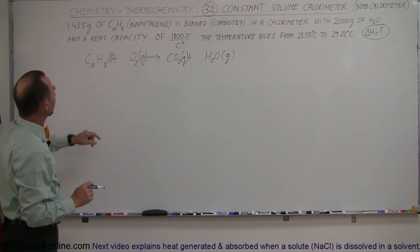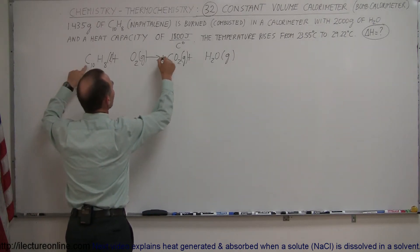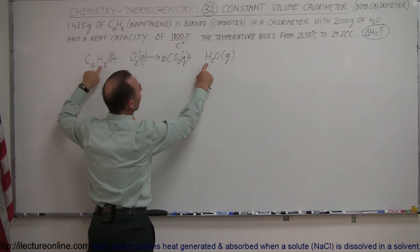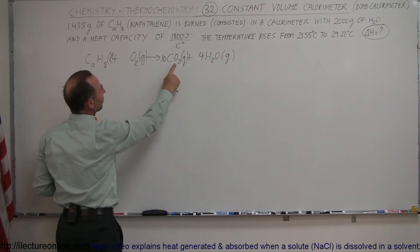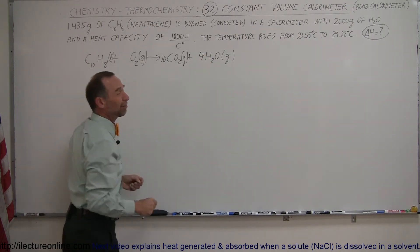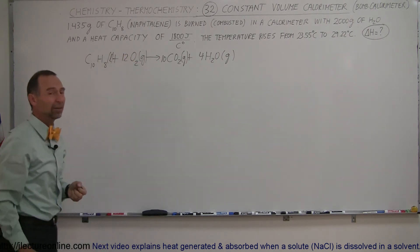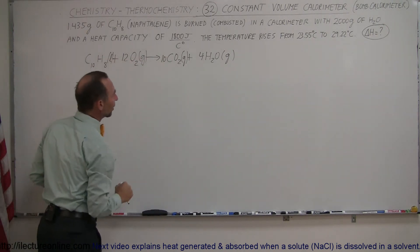How much do we need in order to balance it? We have 10 carbons here, we only have one carbon here, so we need 10 of these. We have 8 hydrogens here, we need 8 of them there, so we need a 4 on there. Now we have 20 oxygens and another 4, that's 24 oxygens, so we need a 12 over here. Now the equation is balanced. That's just for reference. We do realize that we only need one mole of this in order to sustain the reaction.